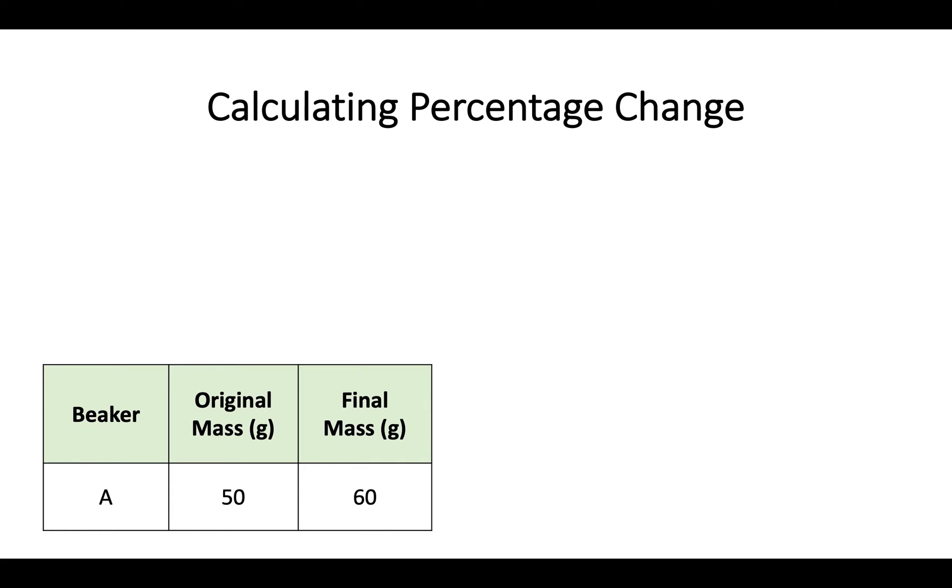So for example, you could be given some sort of table like this where you're given a beaker or a sample, an experiment, whatever it is, and you're being given both the initial mass or number or height, any sort of value there, and you're also given the final mass. From that you're being asked to calculate the percentage change between these two numbers.